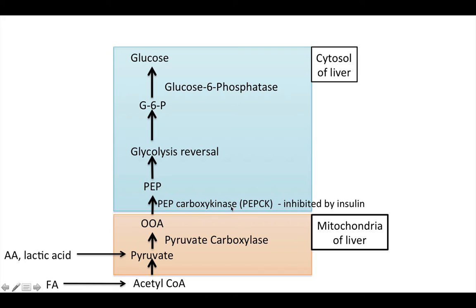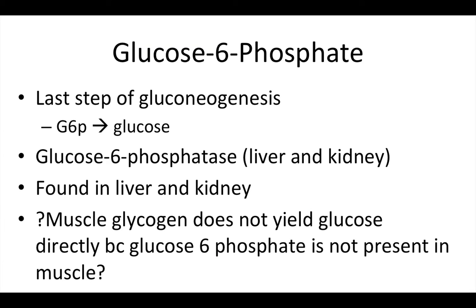Oxaloacetate is converted by pyruvate carboxylase. Then oxaloacetate is transferred from the mitochondria to the cytosol and gets converted into PEP — phosphoenolpyruvate. This is done by an important enzyme called PEP carboxykinase, abbreviated as PEPCK. The key thing to know about PEPCK is that it is inhibited by insulin. Then the rest of the steps are basically a reversal of glycolysis until you get to glucose-6-phosphate.